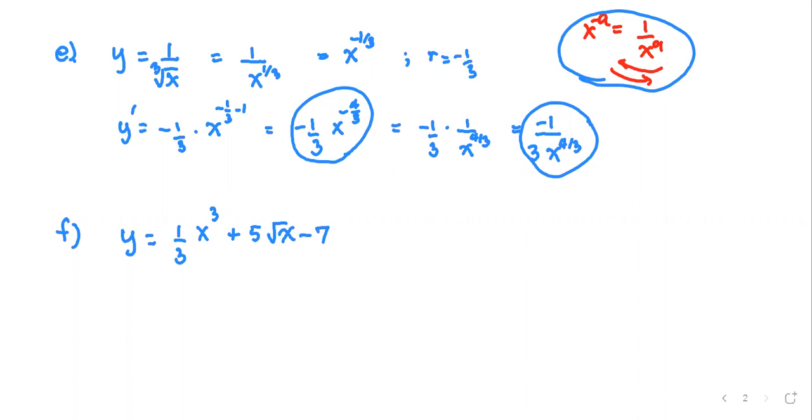For this problem you have three terms. Do one term at a time. So y prime, this step I'm going to do the derivative. The first term has the coefficient one over three.